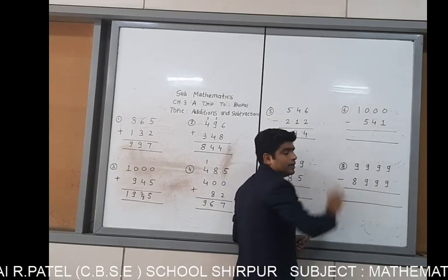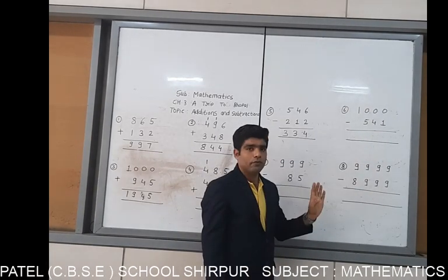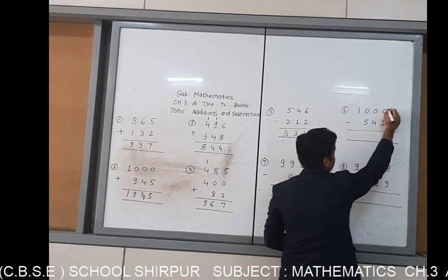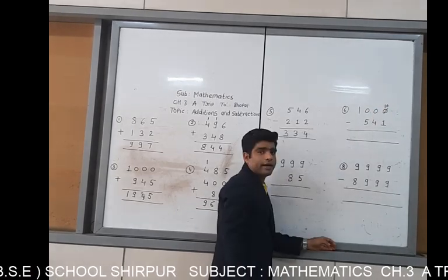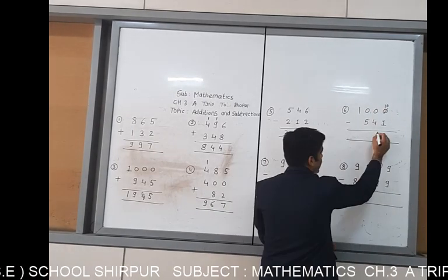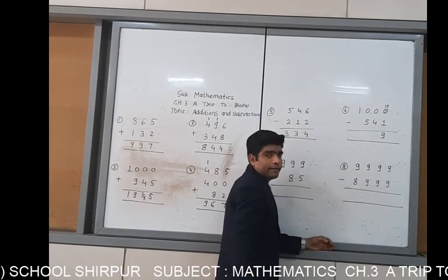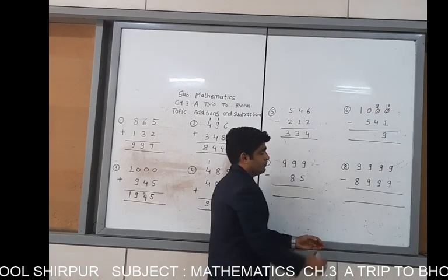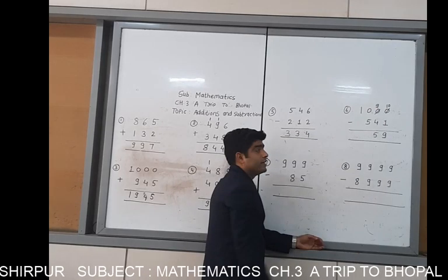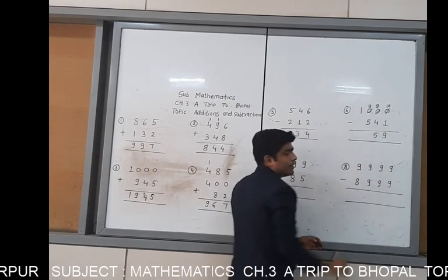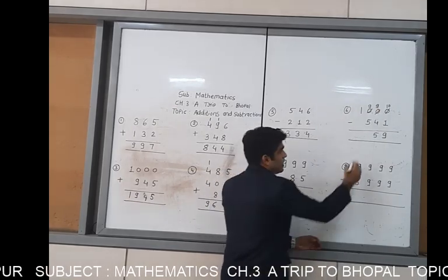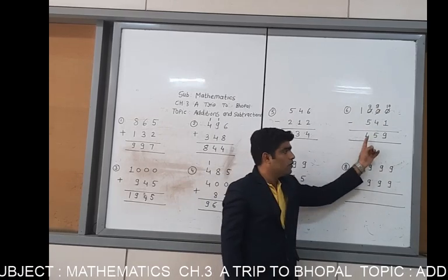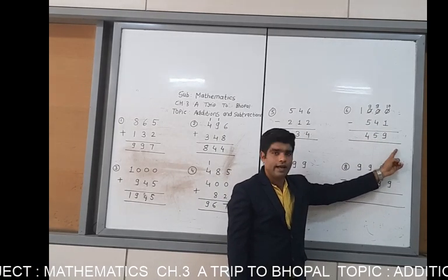Now let's start from the sixth example: 1000 subtraction of 549. 0 minus 1 is not possible, so you have to write down 10. 10 minus 1 is 9. This is also 9. 9 minus 4 is 5. 9 minus 5 is 4, and 1 is also 0. Your answer is 459.